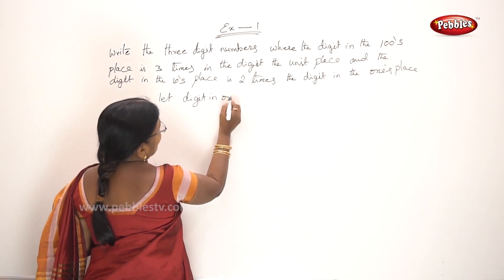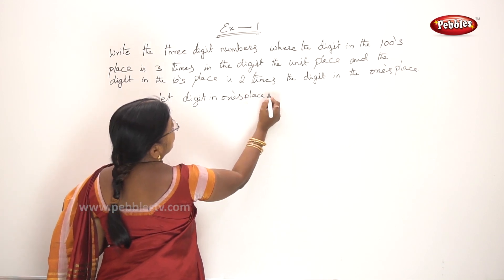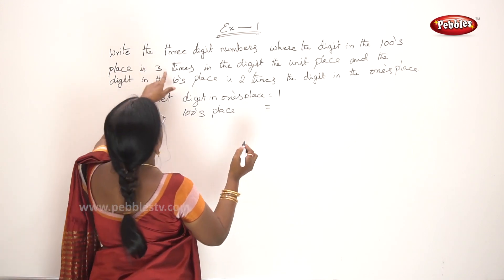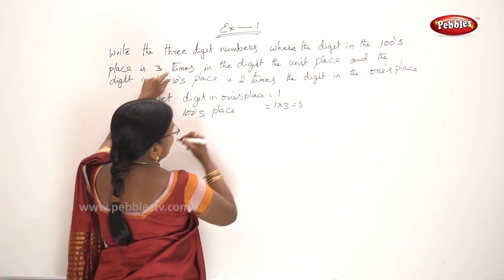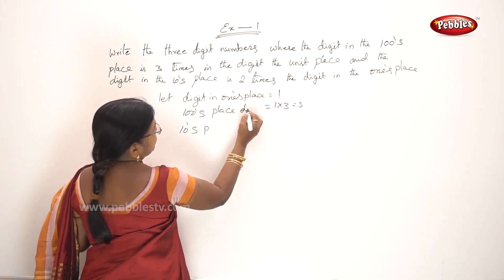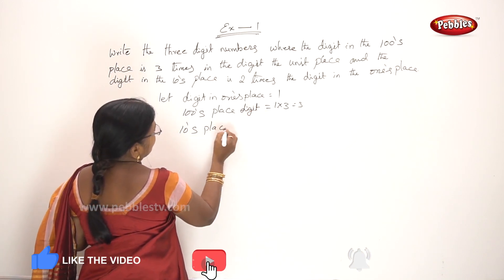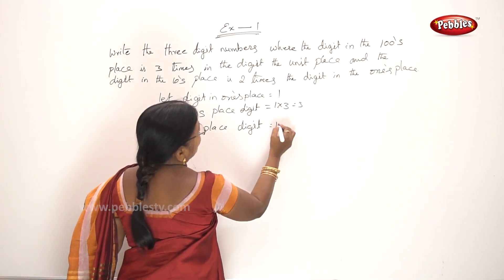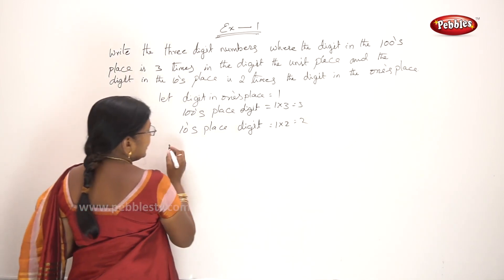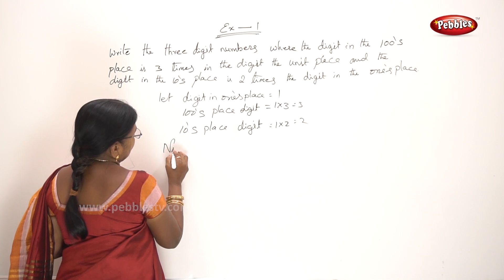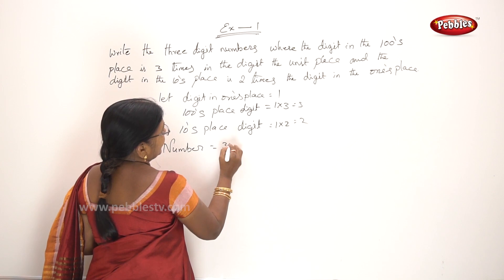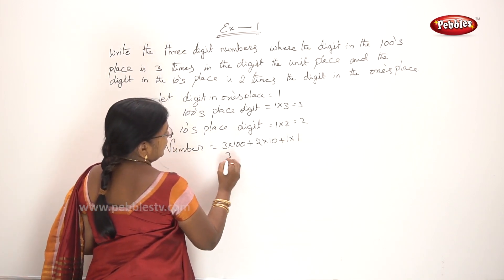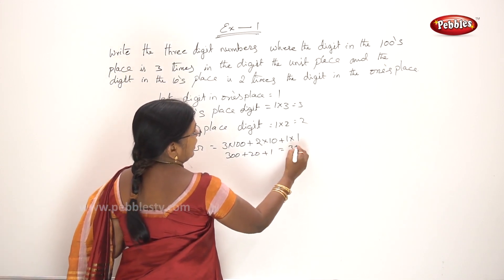Let the digit in the ones place equal one. Hundreds place digit is three times one, equal to three. Tens place digit is two times one, equal to two. The number is 3×100 + 2×10 + 1×1 = 300 + 20 + 1 = 321.